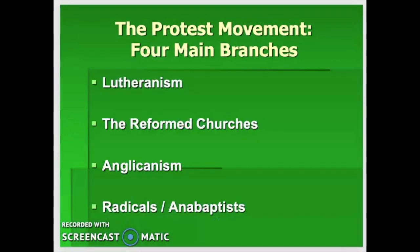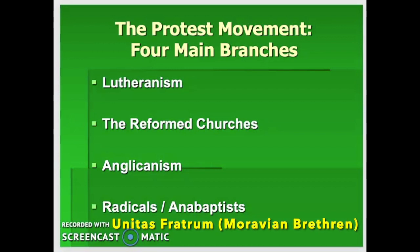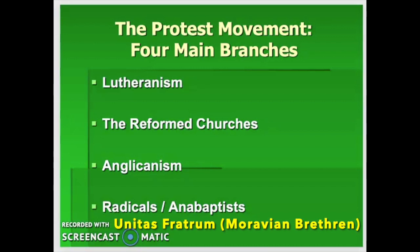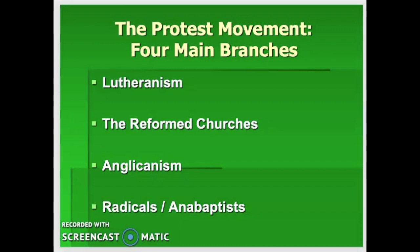The protest movement that eventually succeeded in breaking away from the Roman Catholic Church can be divided into four main branches. The Unitas Fratrum that Jan Hus began was not a successful Protestant movement because it was underground and persecuted. But the four main groups that were successful were Lutheranism, the Reformed Churches, Anglicanism, and the Radicals — with the main successful group from the Radicals being the Anabaptists.